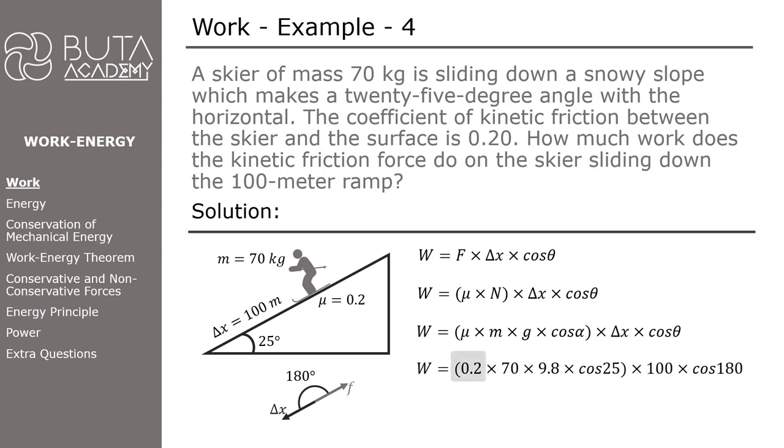Coefficient of friction is 0.2, mass of the skier is 70 kg, gravitational acceleration is 9.8 m/s², the angle of incline is 25 degrees, the displacement is 100 meters, and the angle between the displacement and the force of friction is 180 degrees. In this case, work done by friction force equals -12,434.54 joules.